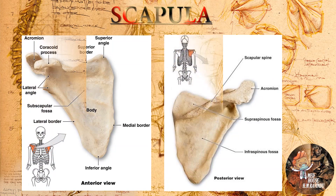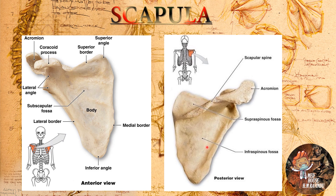We need to know the anatomical structure of the scapula. In this picture you can see the anterior view, and in this picture you can see the posterior view. In the anterior view we can see the subscapular fossa. In the posterior view we can see the supraspinous fossa and the infraspinous fossa.